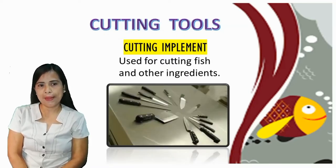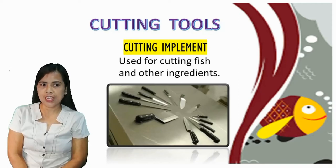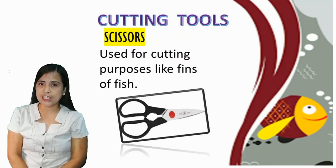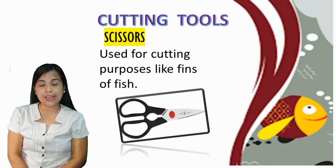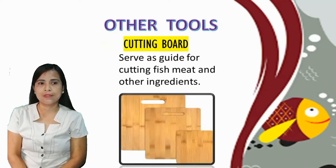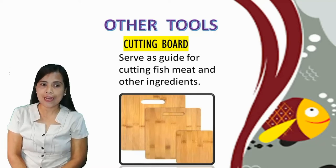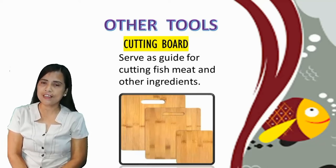Cutting implement: used for cutting fish and other ingredients. Second, cutting tools — scissors: used for cutting purposes like fins of fish. Cutting board: serves as a guide for cutting fish, meat, and other ingredients.